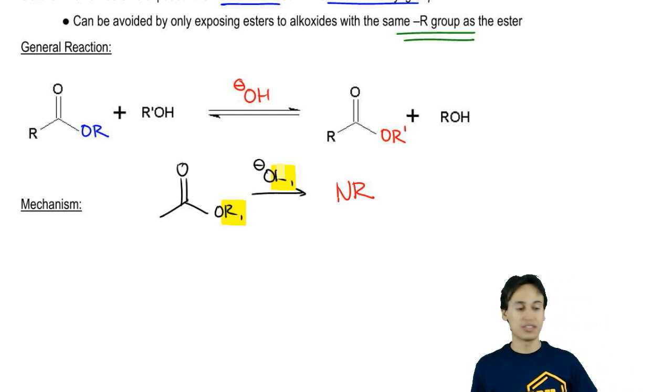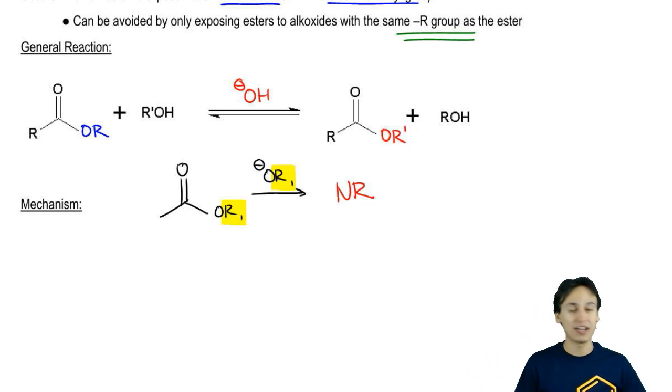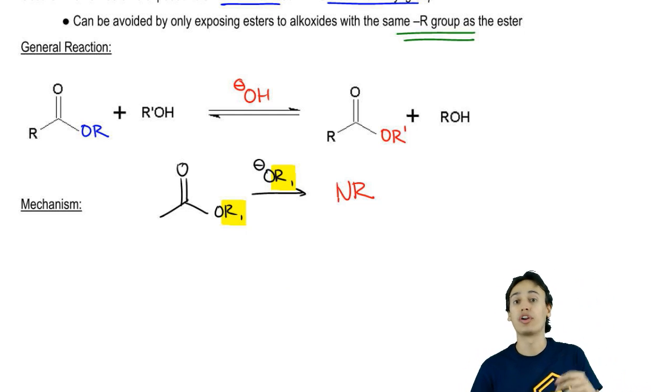I won't be able to notice that a reaction is actually taking place because it's not really mattering for my reaction. The only time it would matter is if I have a different R group, let's say it was R1 and R2. Now I'm going to get a mixture of R groups transesterifying.